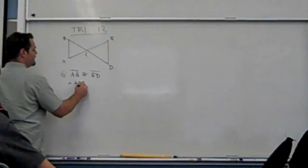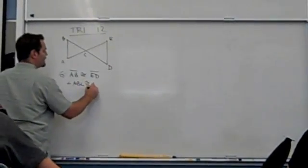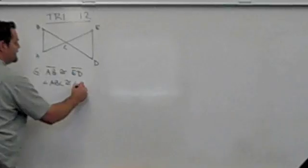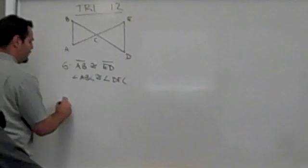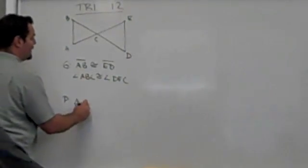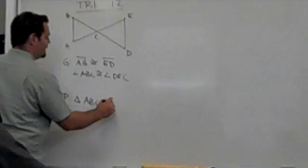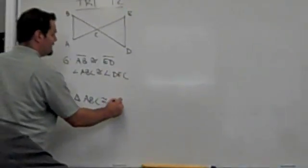ABC is congruent to angle DEC and I want to prove that triangle ABC is congruent to triangle DEC.